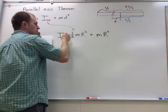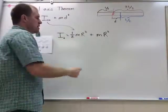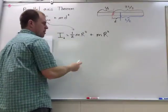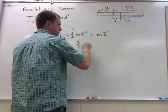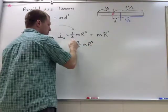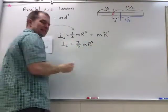That means my moment of inertia about point D is going to be one-half m r squared plus m r squared, or three-halves m r squared, will be my moment of inertia about point D.